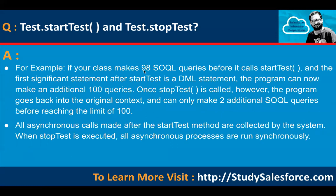For example, if your class makes 98 SOQL queries before it calls startTest and the first significant statement after startTest is a DML statement, the program can now make an additional 100 queries. Once stopTest is called, the program goes back into the original context and can only make two additional SOQL queries before reaching the limit of 100. Also, all asynchronous calls made after startTest are collected by the system and when stopTest is executed, all asynchronous processes are run synchronously.